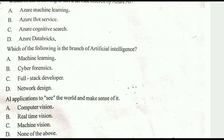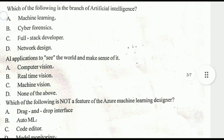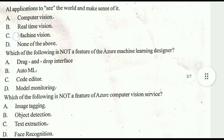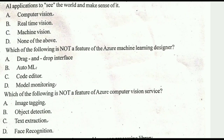Eighth question: which of the following is a branch of artificial intelligence? The correct answer is machine learning — machine learning is the correct answer. Ninth question: AI applications that see the world and make sense of it — the correct answer is computer vision.